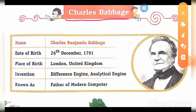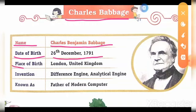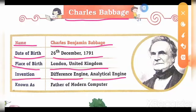First, Charles Babbage. Name: Charles Benjamin Babbage. Date of Birth: 26th December 1791. Place of Birth: London, United Kingdom. Invention: Difference Engine and Analytical Engine. Known as Father of Modern Computer. Charles Babbage was a mathematician, philosopher, inventor and mechanical engineer. Babbage originated the concept of a digital programmable computer, considered by some to be the father of the computer. Babbage is credited with inventing the first mechanical computer that eventually led to more complex electronic designs.